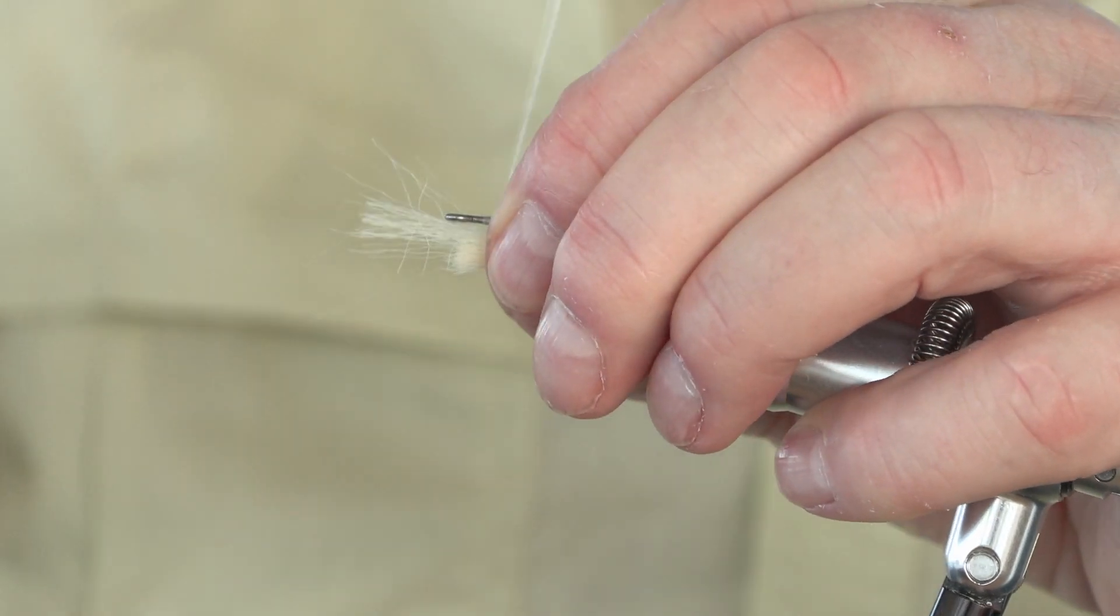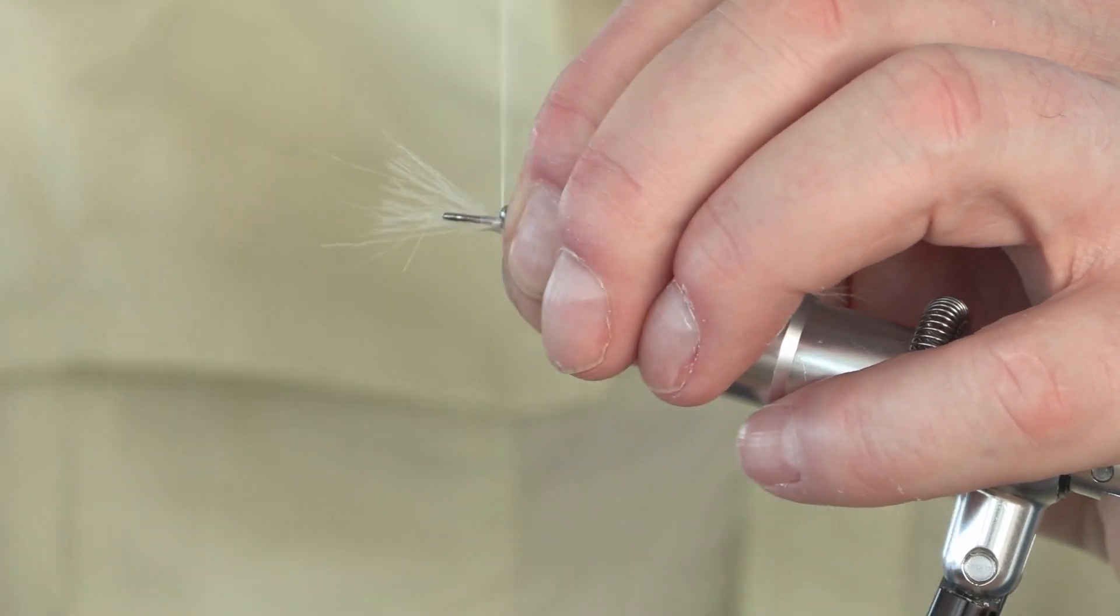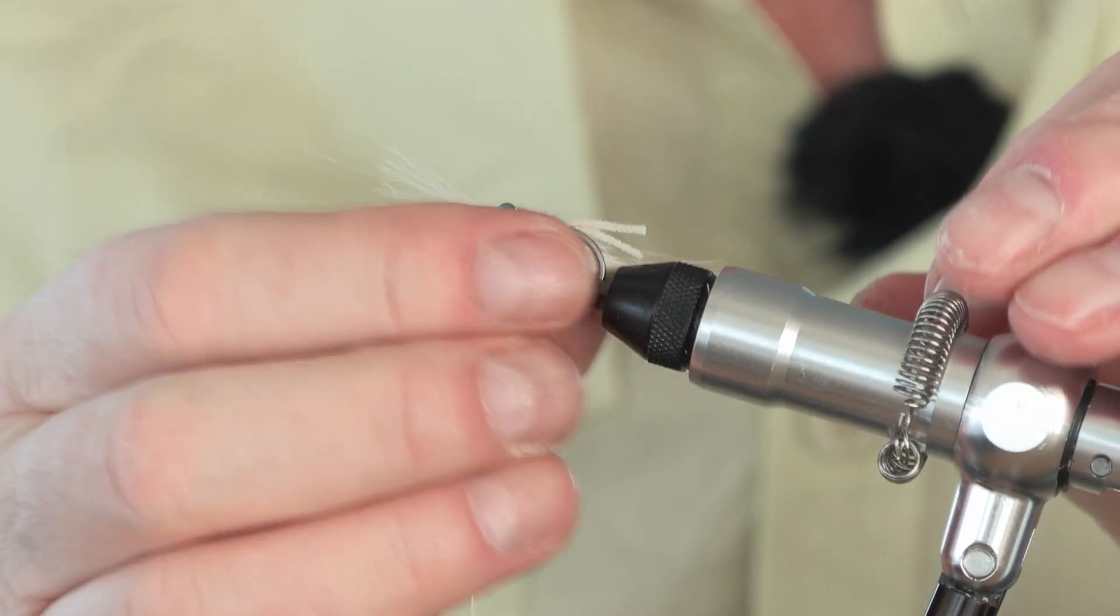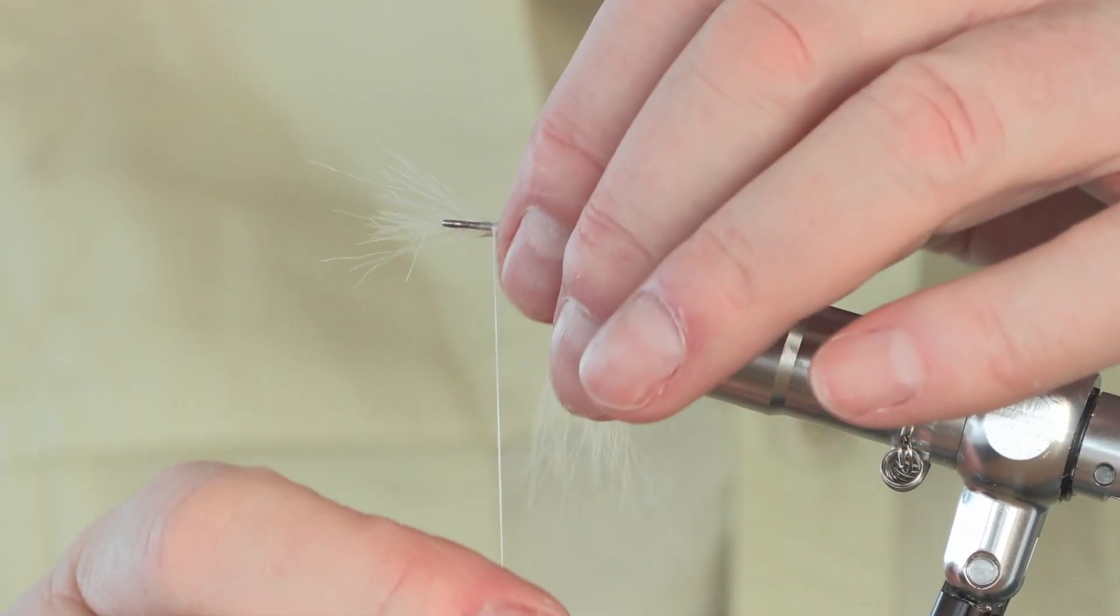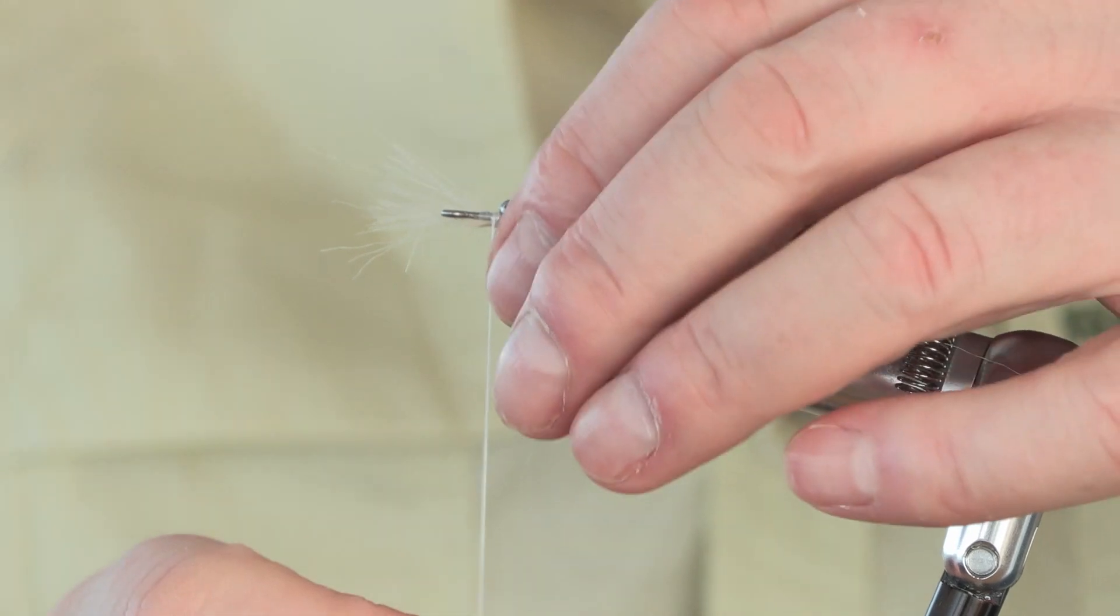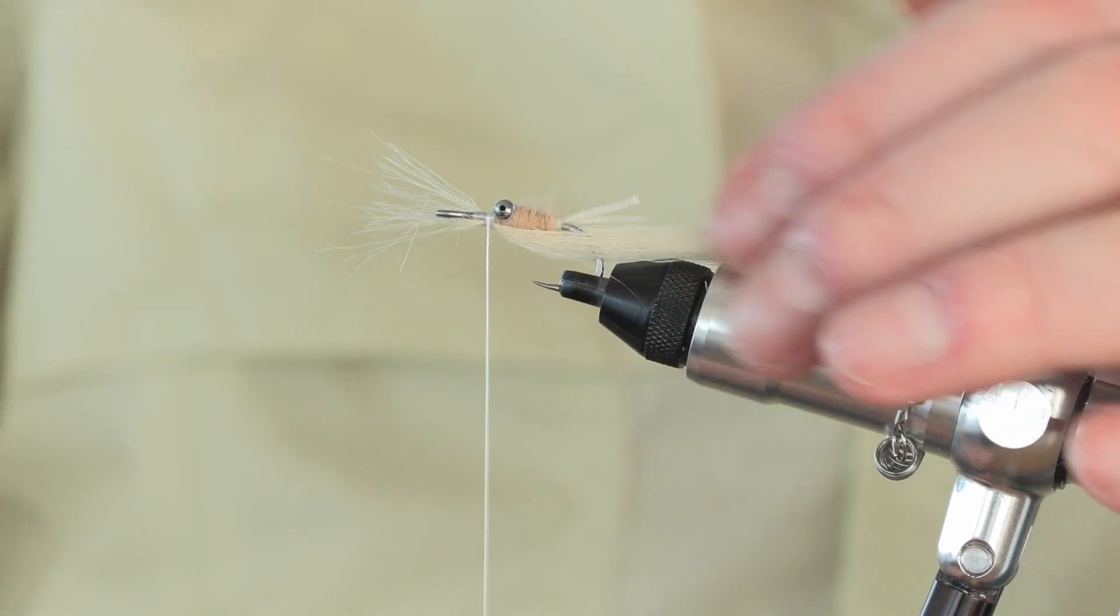You'll notice I'm not putting any glittery stuff, any tinsel, nothing in the fly. We really don't want this fly to be like that because spooky fish just don't like bling on a fly. So there we are, there's the beard in shape.